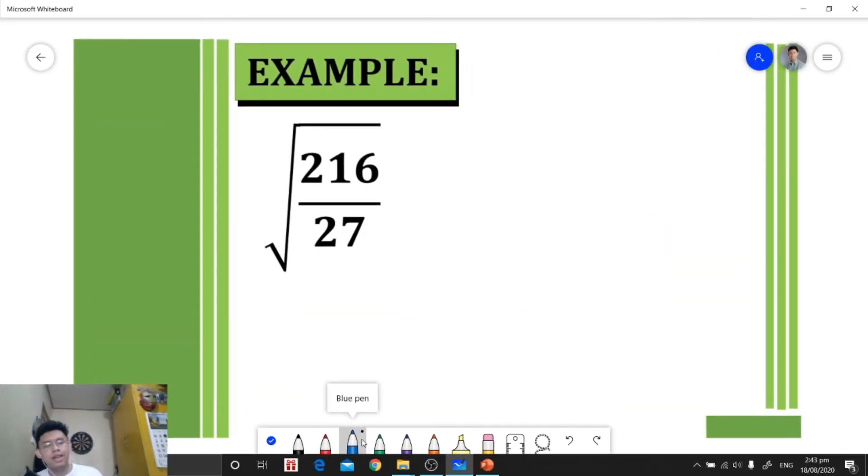Let's have our last example for today. For example, we have the square root of 216 over 27. Now it's too big, so I'm going to factor my numerator. When I'm handling big numbers, I get the factors of our numerator.